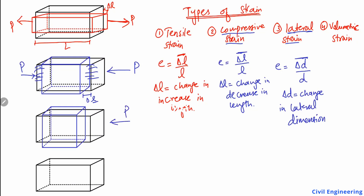For example, if we apply a compressive load P on this object, the body compresses and also expands in the lateral direction. You can see here that Delta D represents the change in the lateral dimension on each side. The ratio of this change in lateral length to the original lateral length D gives us the lateral strain.